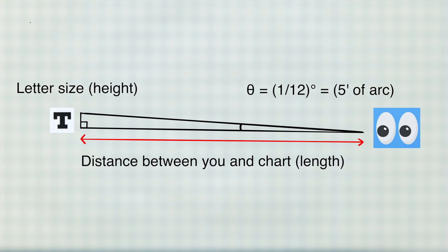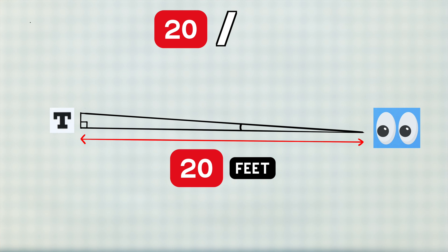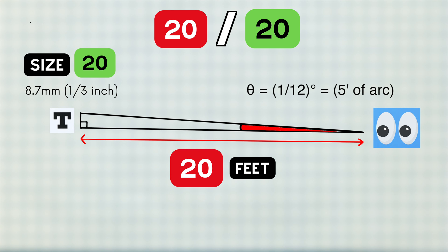For you to have 20-20 vision, you must stand 20 feet from a vision chart and be able to read letters that are about 8.7mm in height. This is because one twelfth of a degree projected out to 20 feet should give a height of 8.7mm.